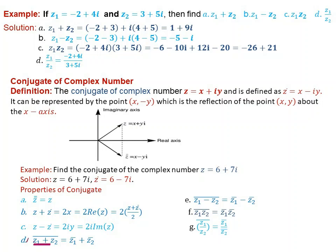Further properties: The conjugate of z1 plus z2 equals the conjugate of z1 plus the conjugate of z2. The conjugate of z1 minus z2 equals the conjugate of z1 minus the conjugate of z2. The conjugate of z1 times z2 equals the conjugate of z1 times the conjugate of z2. The conjugate of z1 over z2 equals the conjugate of z1 over the conjugate of z2.